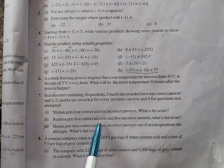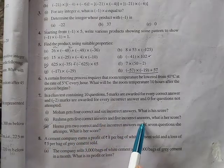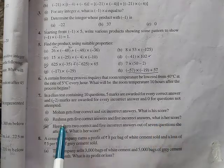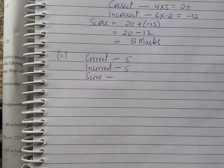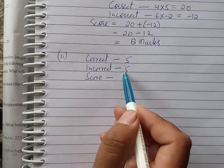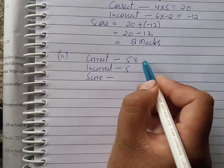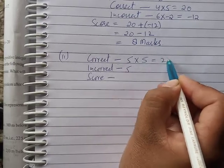Next, the second part. She gets five correct and five incorrect answers. What is her score? The correct answer is five, so 5 times 5, which is 25. The incorrect answer is five, so 5 times minus 2.